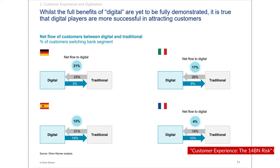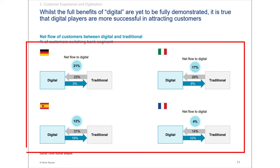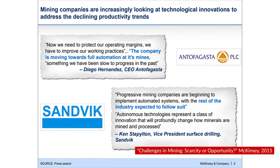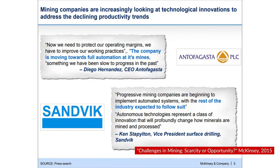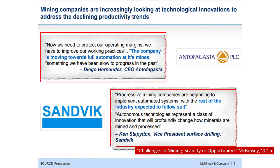The truth is every well-made slide has a clear message. In this slide from Oliver Wyman, the message is that digitally focused banks are more successful at attracting new customers than traditional banks, and it's pretty easy to see that reflected in the content with each visual showing the net flow of customers from digital to traditional and vice versa. Or this slide from McKinsey about innovation in the mining industry — the clear message is that companies are using innovation to address declining productivity trends, supported by quotes from mining company executives.